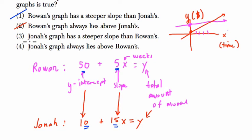There is a certain amount of time where Rowan's is lying above the graph. And we'll find exactly in a moment. Jonah's graph has a steeper slope than that. That's true, because we're saving more each week. Jonah's graph always lies above Rowan's. No, that's not true, because sometimes he's below.